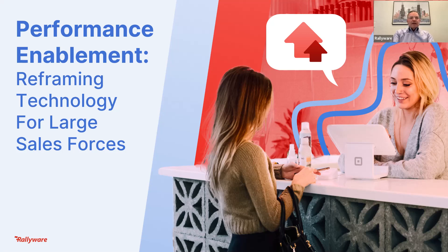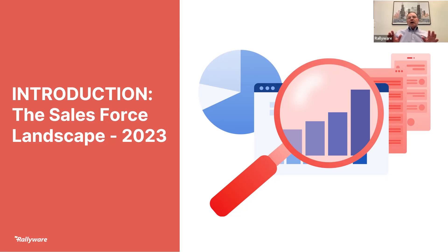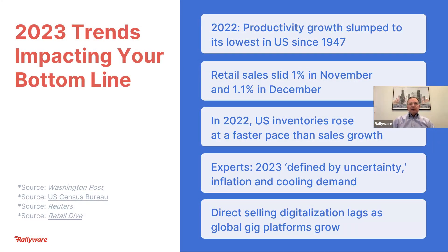What are we going to talk about today? Performance enablement. As we do, I'd like to set a bit of a landscape for that. We're in the first quarter of 2023. What is 2023 going to look like for all of us out there? Let's talk about some Salesforce trends we're seeing. As we look at the trends from the end of last year and beginning of this year, we see that productivity growth has slumped to its lowest point since 1947 — that's from the Bureau of Labor Statistics. Our sales force is getting less productive across the board.